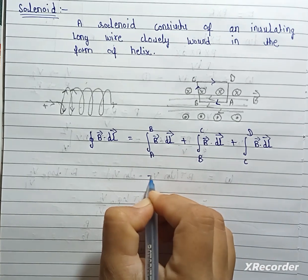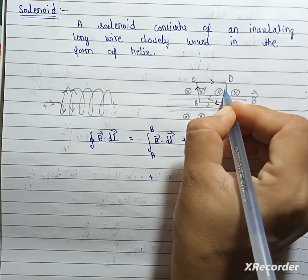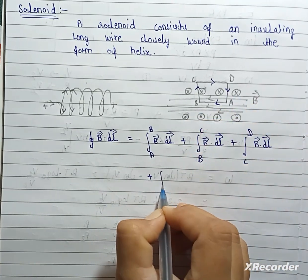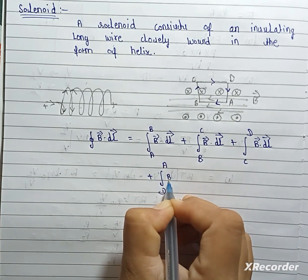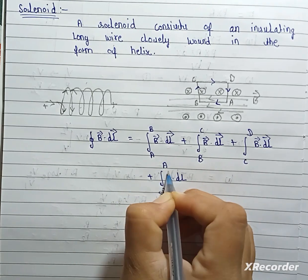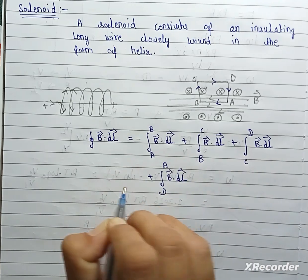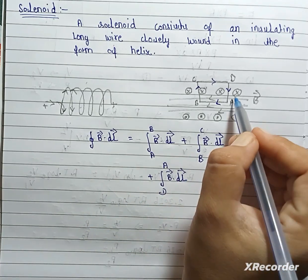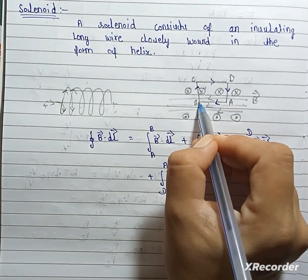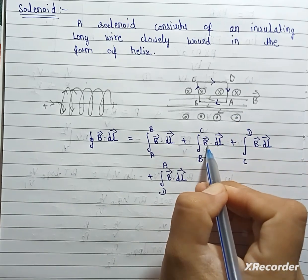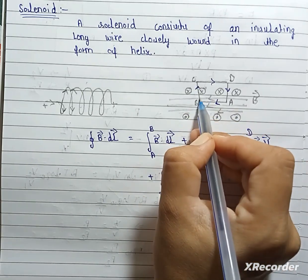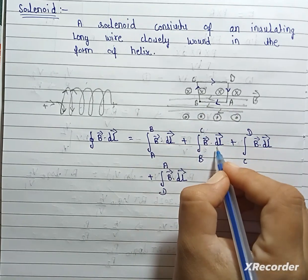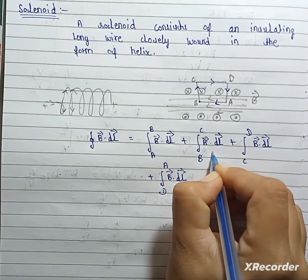And, plus, last for DA. B dot DL. But, here, theta in between is 90 degree. So, here, cos 90 is 0.